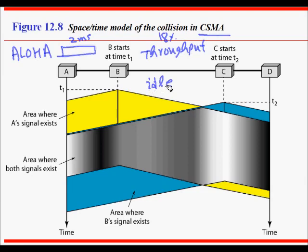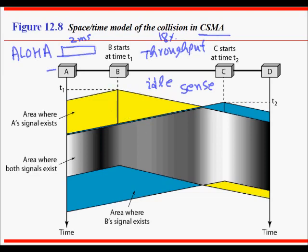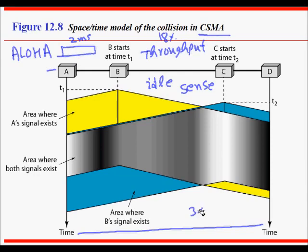This is carrier sensing — you sense the channel, and if no one is transmitting then you transmit your frame. You might think this solves everything, but that's not entirely true. The diagram shows a LAN with a time axis and the length of the wire. Signals take some time to propagate even at the speed of light, which is 3×10⁸ meters per second.